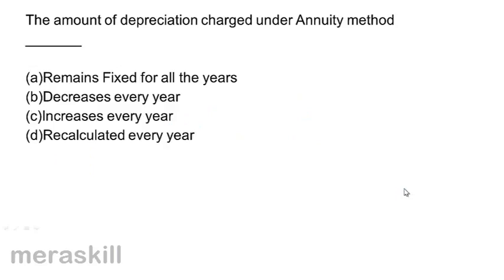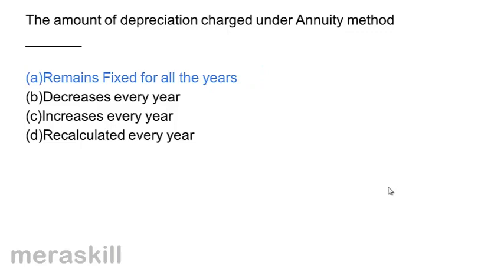The amount of depreciation charged under the annuity method: A. Remains fixed for all years, B. Decreases every year, C. Increases every year, D. Is recalculated every year. Under the annuity method, the annual amount remains fixed for all years. Correct answer: A.